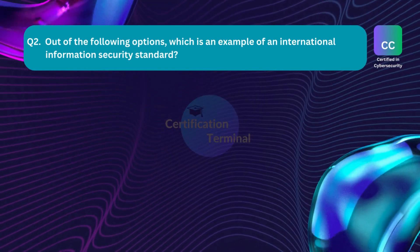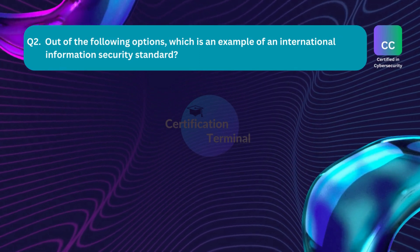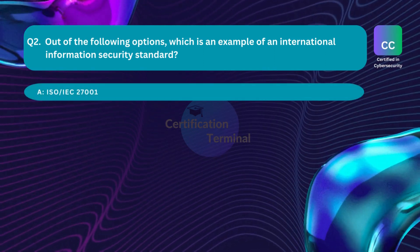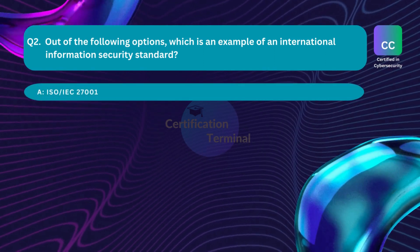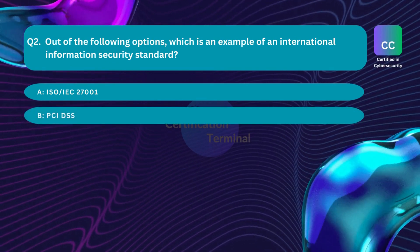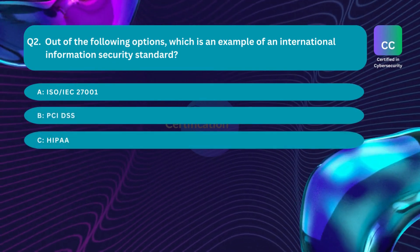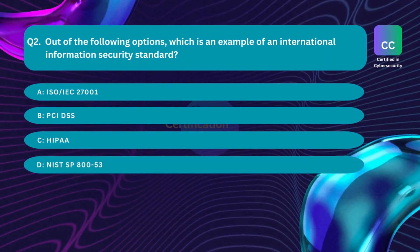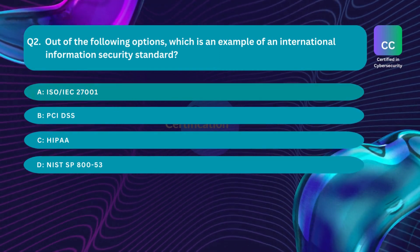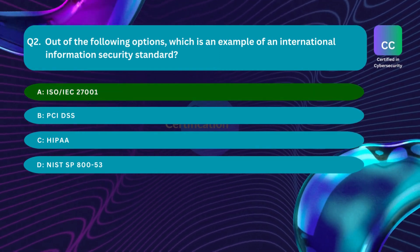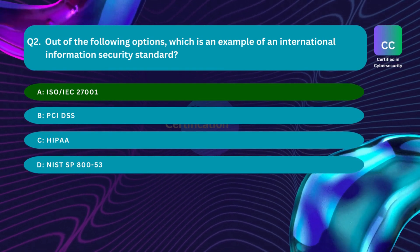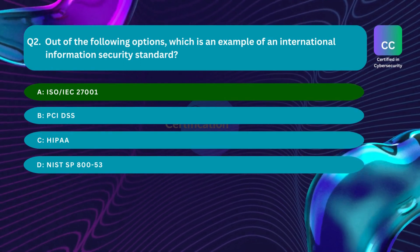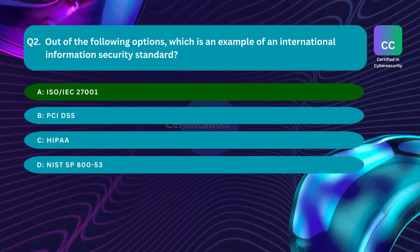Question number two: Which of the following is an example of an international information security standard? Option A: ISO/IEC 27001. Option B: PCI DSS. Option C: HIPAA. Option D: NIST SP 800-53. The correct answer is Option A — ISO/IEC 27001 is the world's best known standard for information security management systems (ISMS).